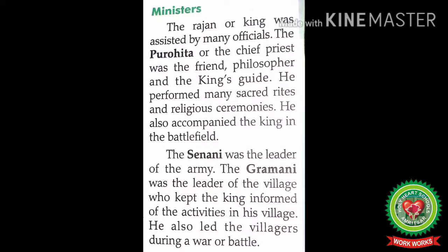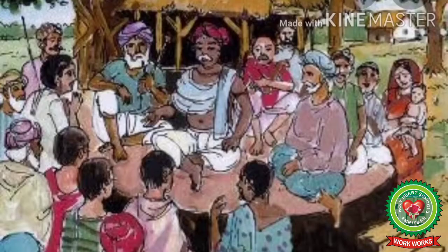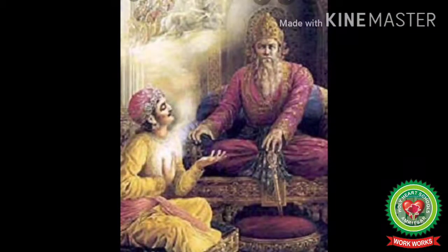The Senani was the leader of the army. The Gramani was the leader of the village, who kept the king informed of the activities in his village and also led the villagers during war or battle. The Gramani was the head of the village who provided all information about village activities to the king.